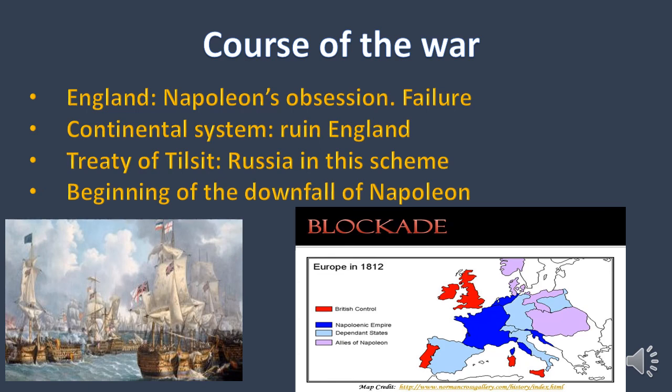This was the beginning of the downfall of Napoleon, because not all the countries respected this continental system, and there were two countries which were very important in that downfall: Russia and Spain. We will discuss those events in our next class. Thank you very much.